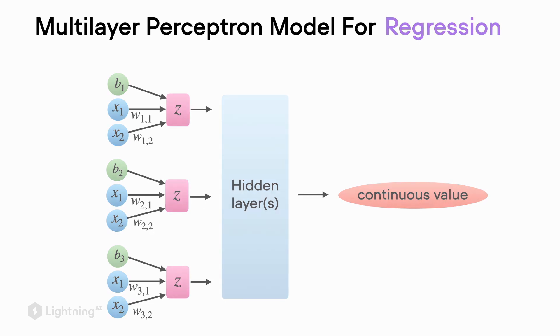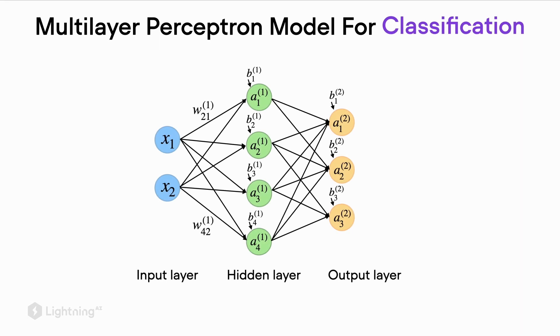So here for reference is a ball and stick representation of the multilayer perceptron for classification. The multilayer perceptron takes two input features, has one hidden layer consisting of four units, and has an output layer consisting of three units. This would be a multilayer perceptron for a dataset with three classes because it has three output nodes.